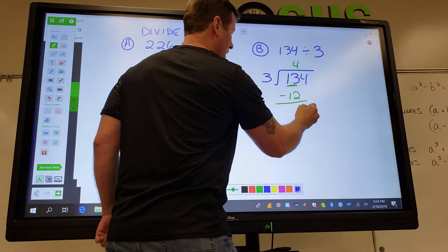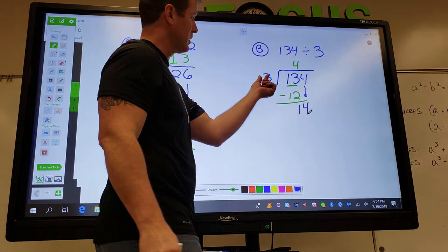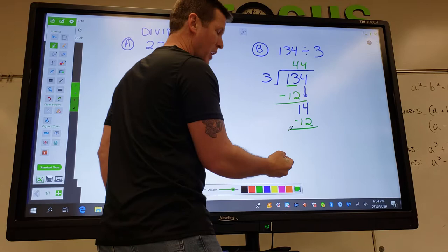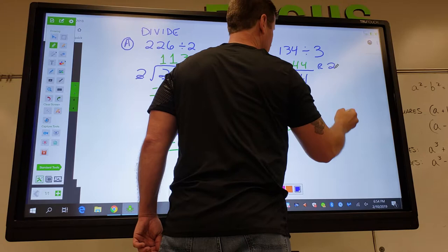If I have anything left over, then I bring down the 4 and then ask myself, how many times does 3 go into 14? It goes in there again, 4 times. 4 times 3 is 12. I need to subtract that 12 and I'm left with a remainder of 2.